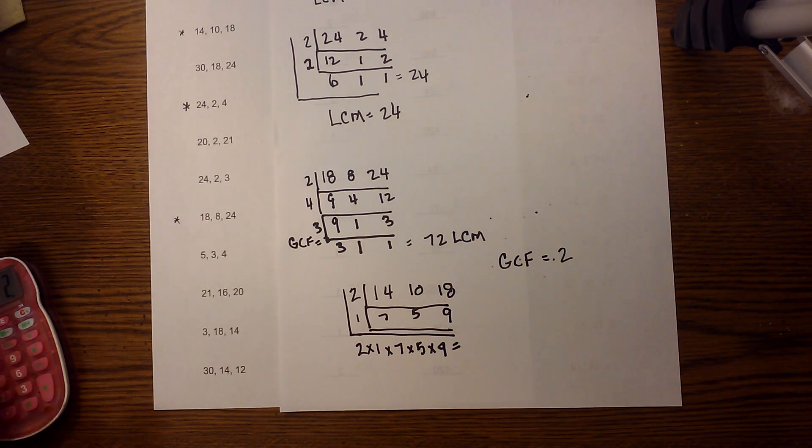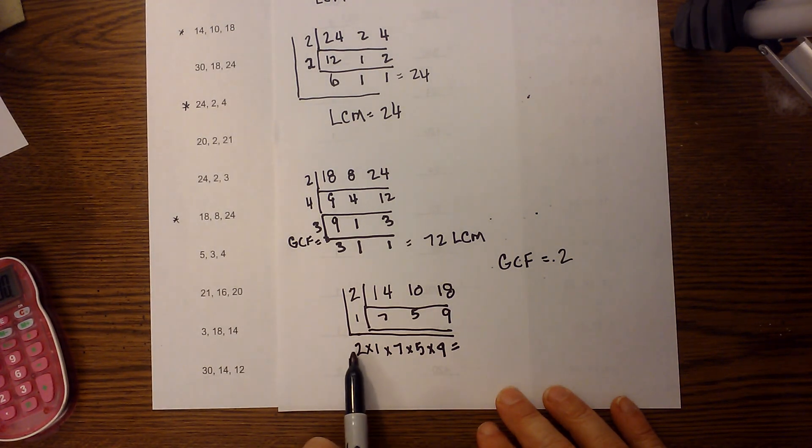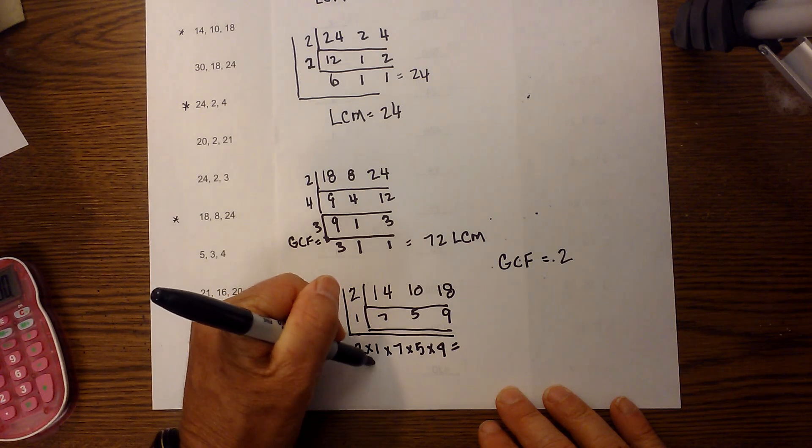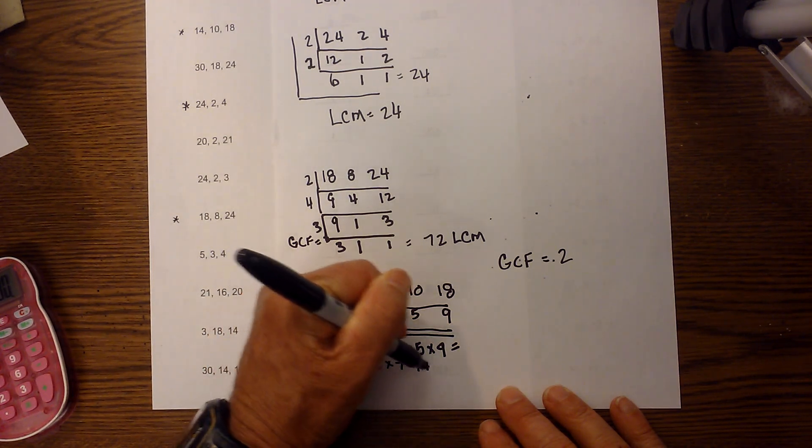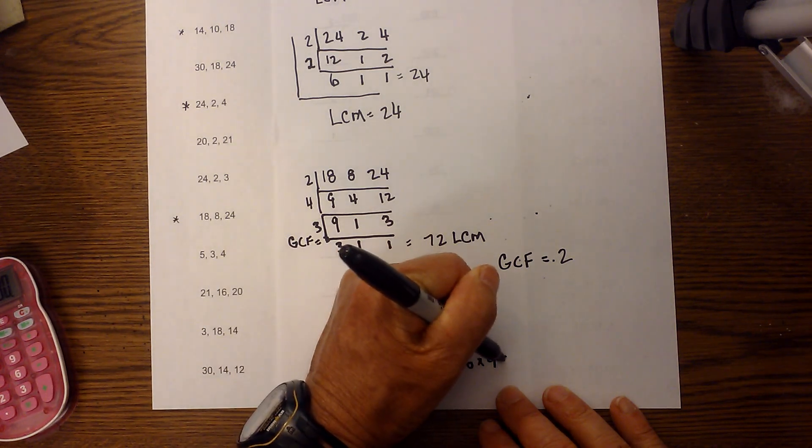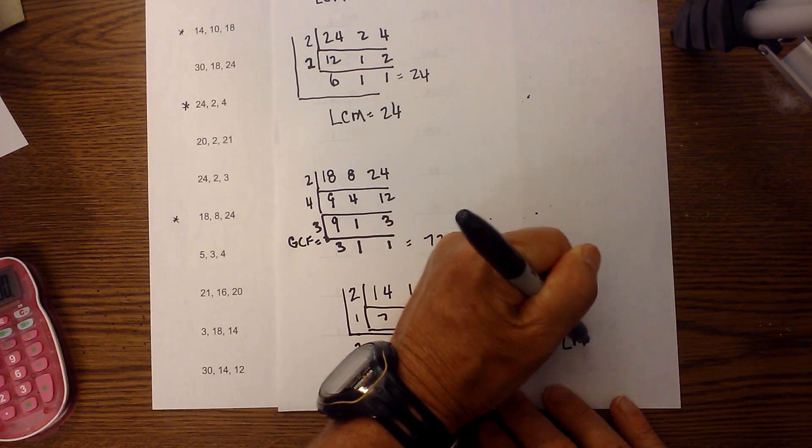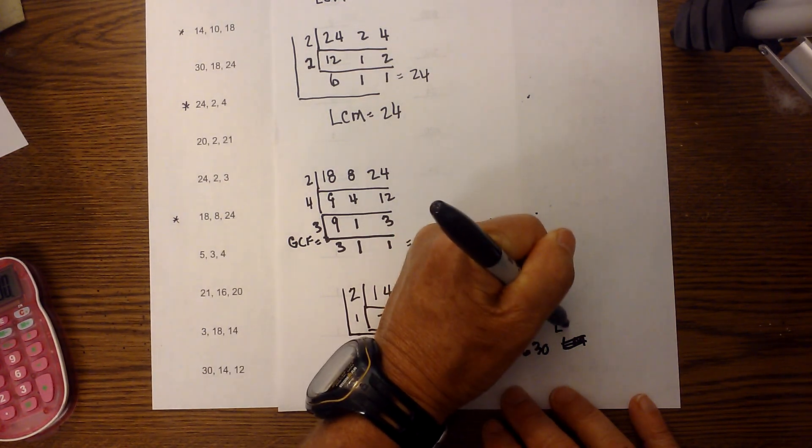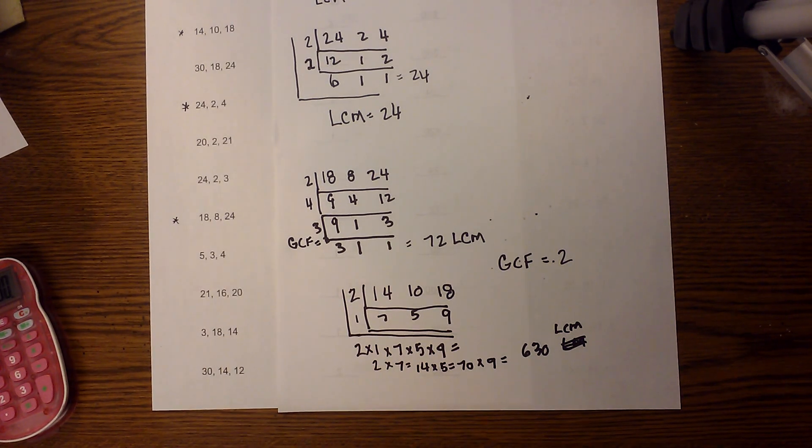When you multiply, 2 times 1 is 2, then 2 times 7 is 14, 14 times 5 is 70, and 70 times 9 is 630. So the LCM is 630. Hope that helped. The shortcut will help in finding the LCM and the GCF of three numbers.